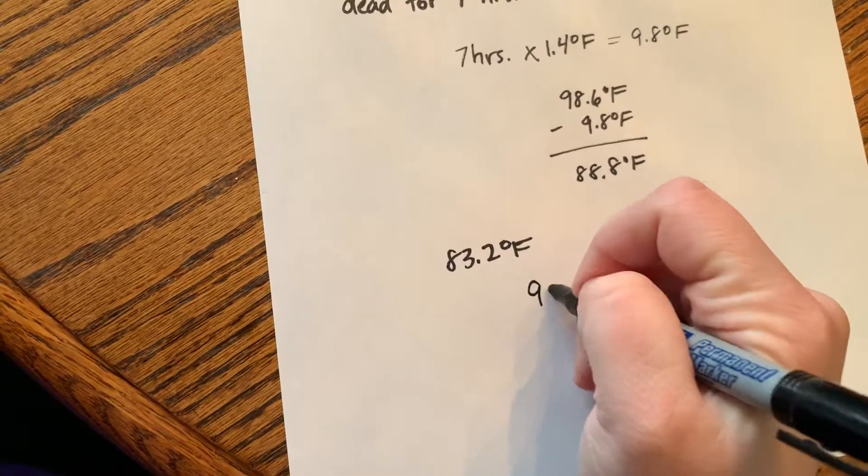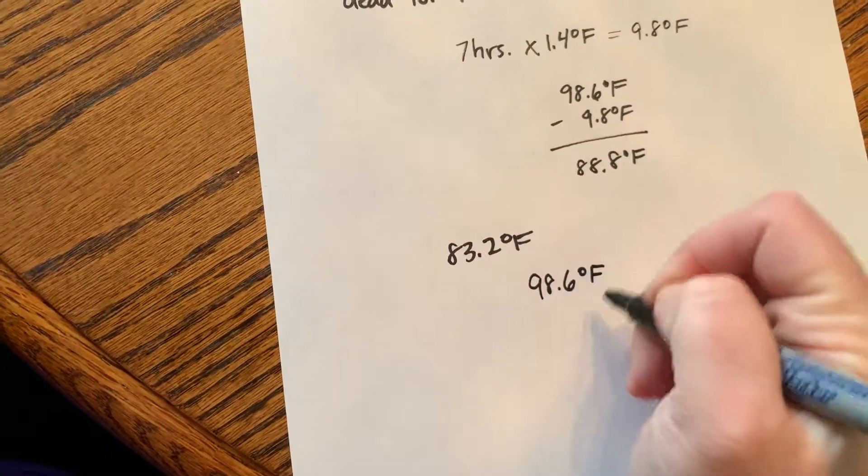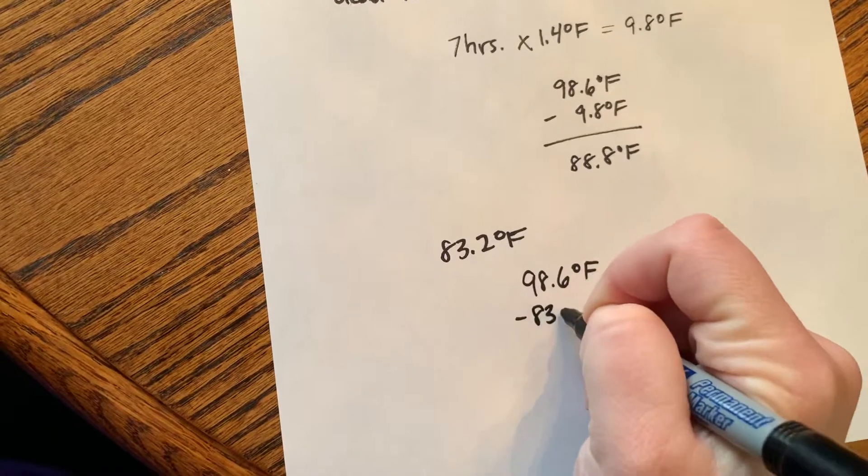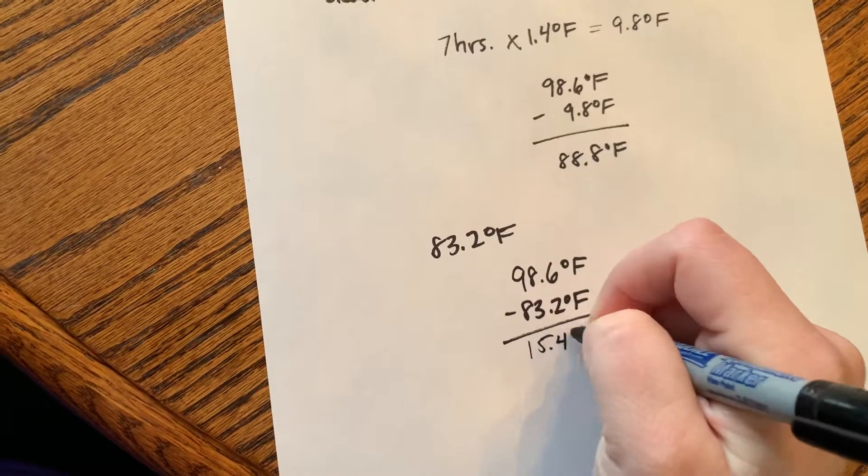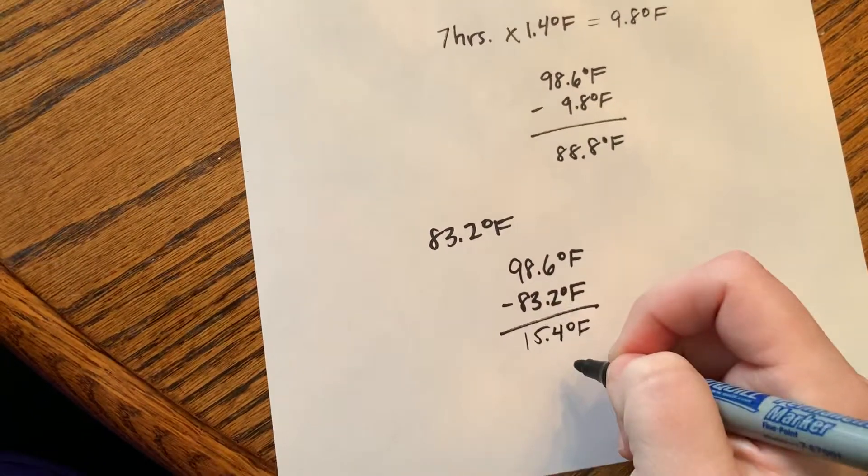So we'll take our normal body temperature, 98.6 degrees Fahrenheit, and subtract 83.2 degrees Fahrenheit, which gives us 15.4 degrees Fahrenheit.